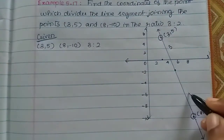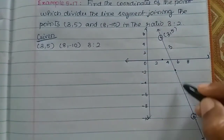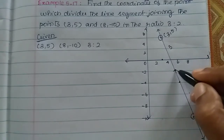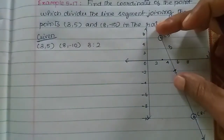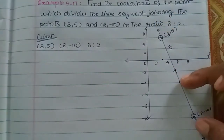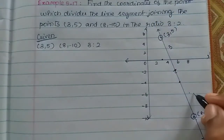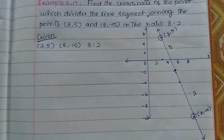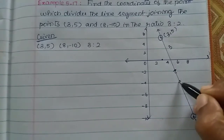The ratio is 3 is to 2 — that is three parts and two parts. This is the larger part and this is the smaller part. So the ratio of the dividing point is 3 is to 2.